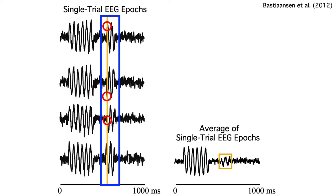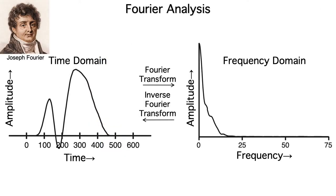In other words, when we do conventional averaging, any oscillations that aren't phase-locked to the stimulus become invisible. That's not good. Time-frequency analysis is a way of making these oscillations visible by estimating the amplitude independent of the phase. That's what Fourier analysis does — it tells us the amplitude at each frequency independently of the phase.